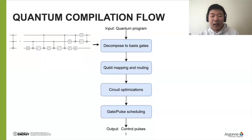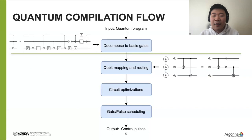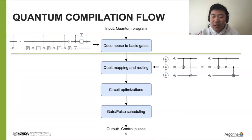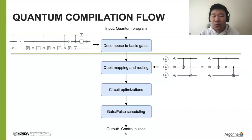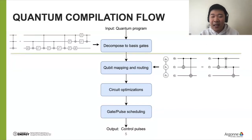After decomposing gates to basis gates, the circuit still cannot be directly executed on hardware because of topology limitations. So we have a qubit mapping and routing algorithm to change the circuit layout. For example, with Q0, Q1, and Q2 linearly connected, a CNOT between Q0 and Q2 is not directly executable. You need to run a qubit routing algorithm that inserts a swap operation to change the layout, making the circuit compatible with the device.